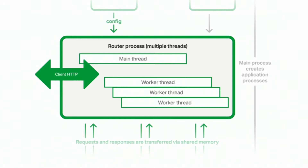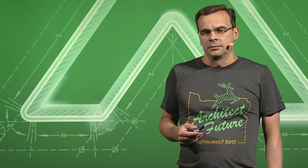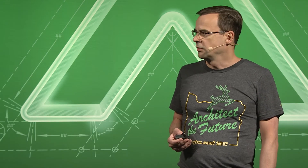The worker threads get responses back from the applications and send them back to the clients. When the router accepts new configurations from the controller process, the worker threads start to handle new incoming connections with these new configurations, while old connections continue to be processed according to the previous configurations. That is, router worker threads can work simultaneously with several generations of configurations without reloading.